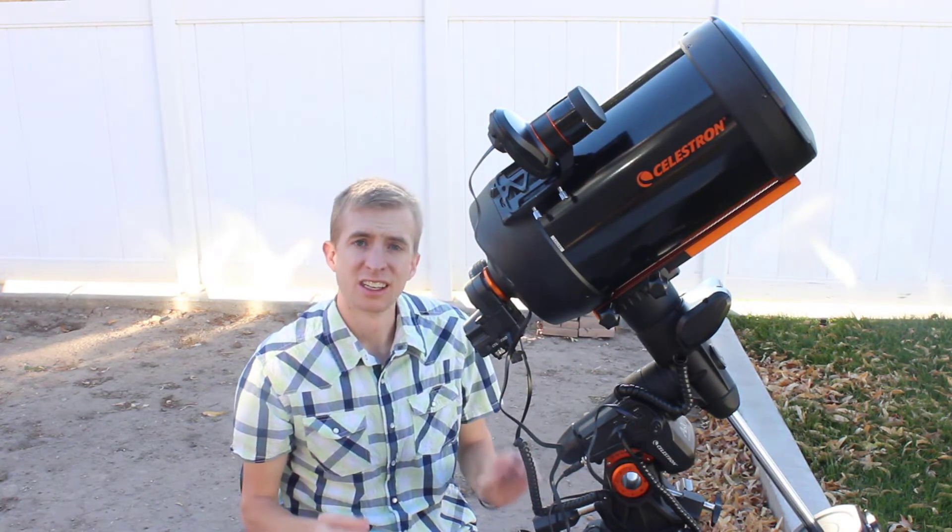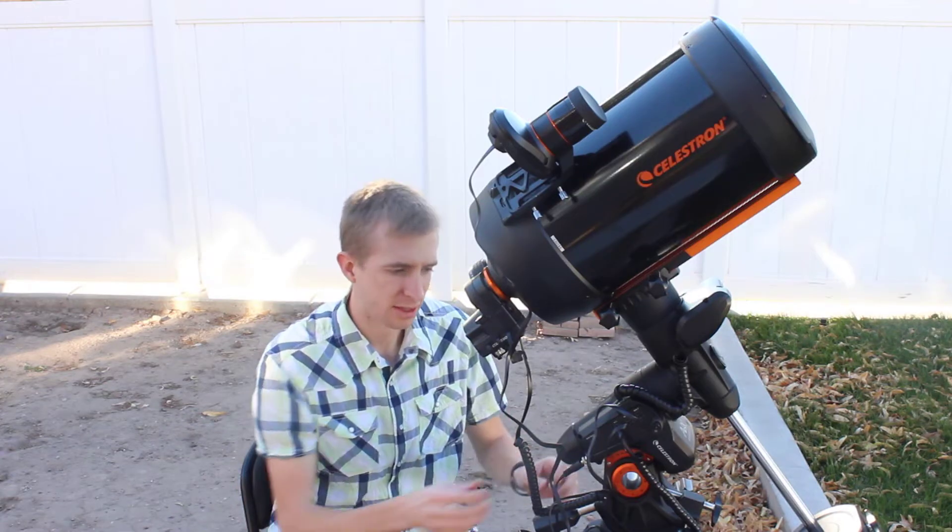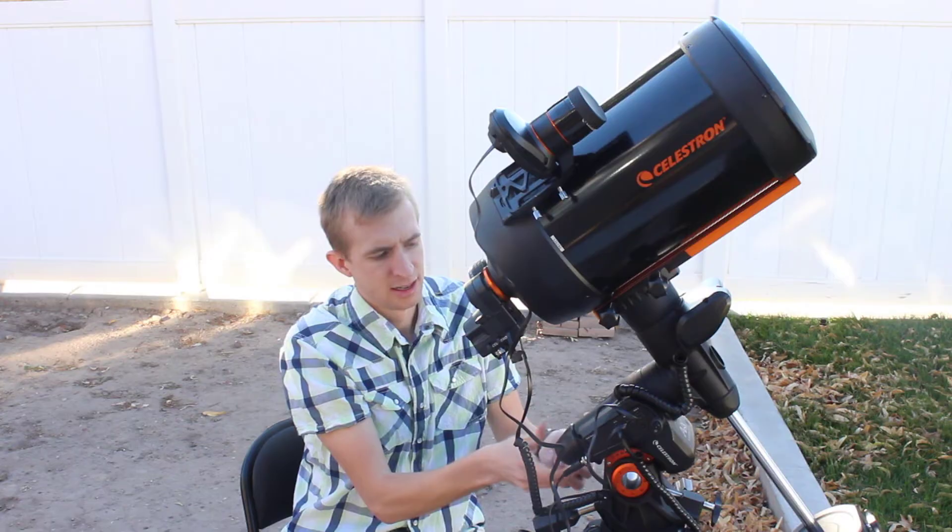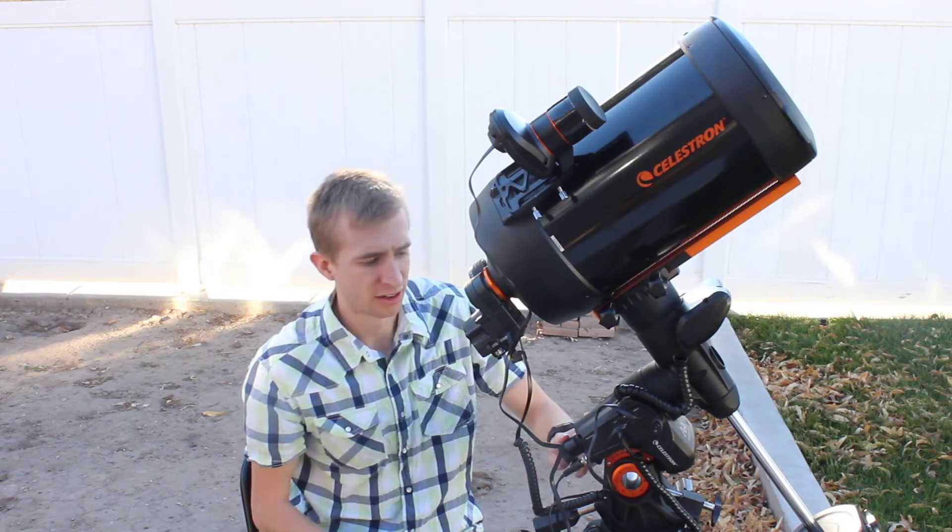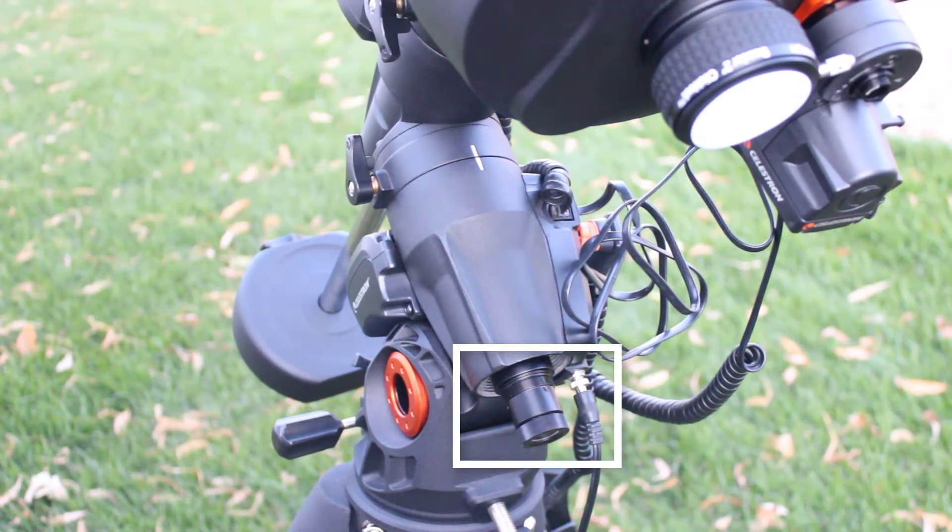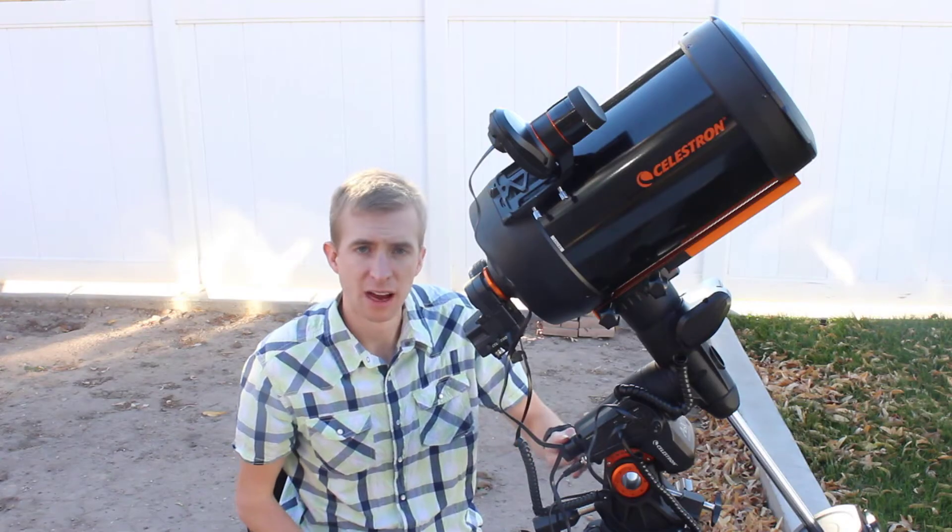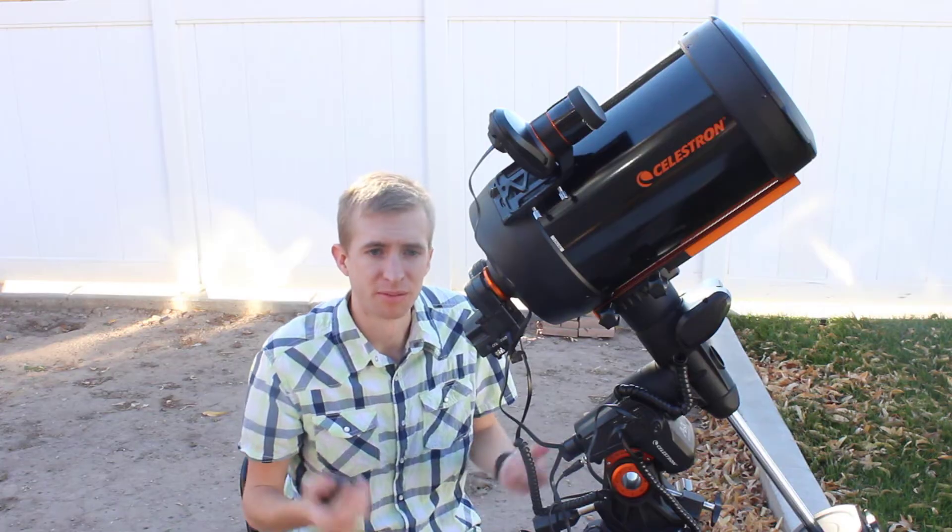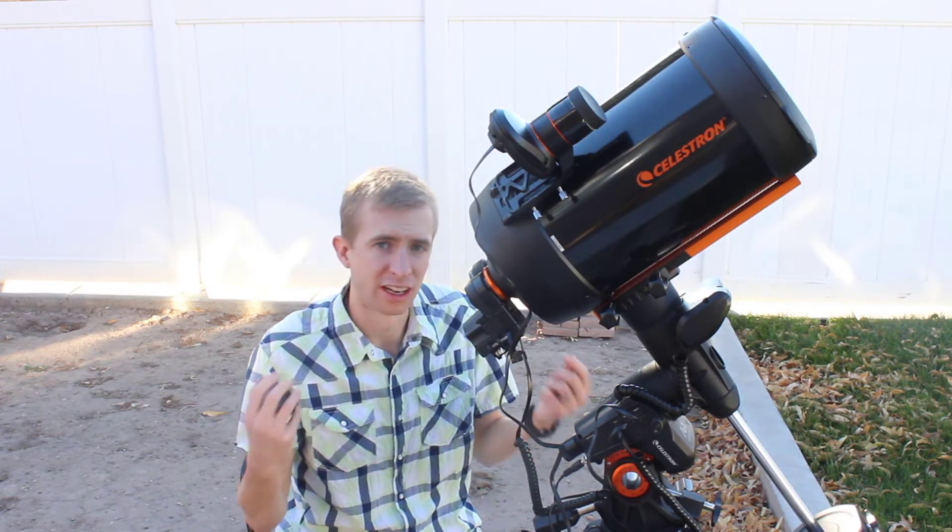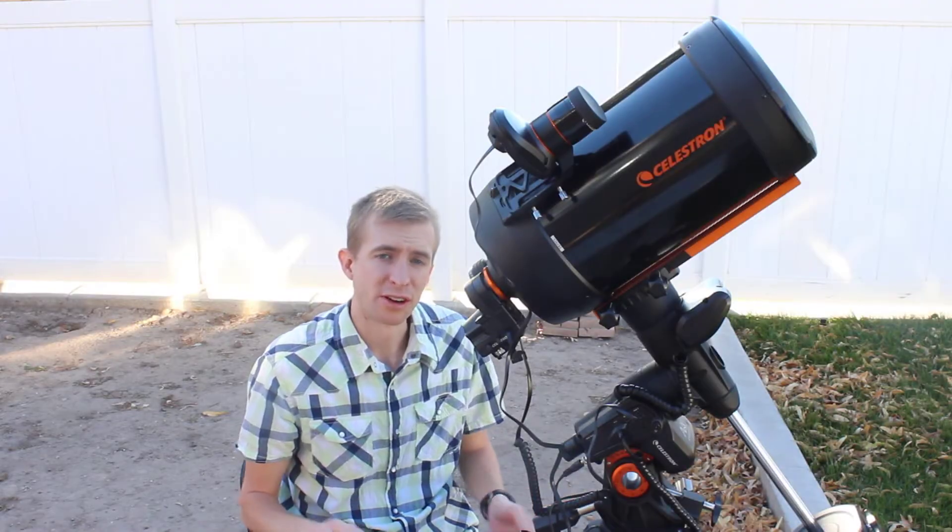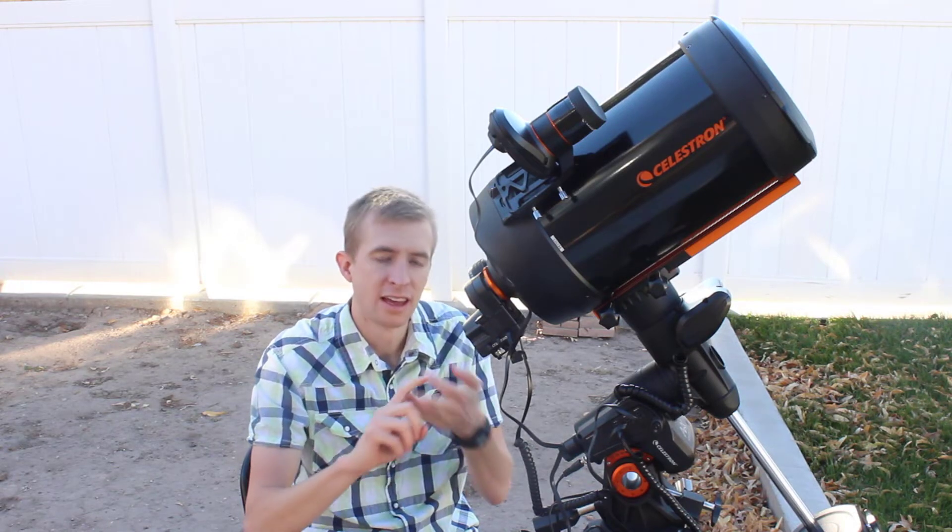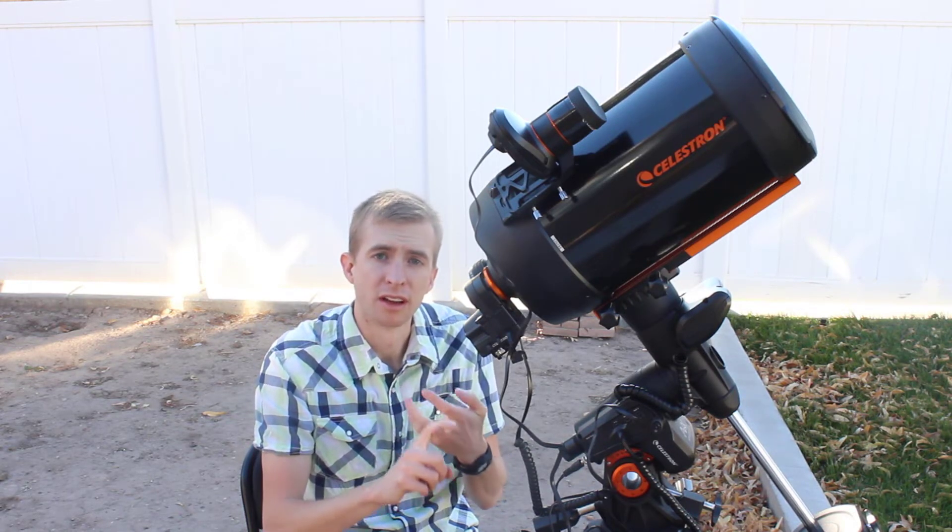And lastly, you need a rough polar alignment. For that, I used the polar scope for the Celestron Advanced VX. And it just needs to be rough. Nothing amazing. If you don't have a polar scope, just look down the bore. If you get Polaris nice in the middle or even close, that should be good enough. So just to reiterate: level your mount, make sure your mount is set to the index marks, and get a rough polar alignment of the mount.